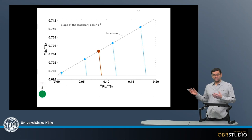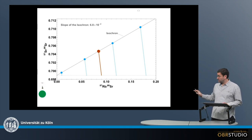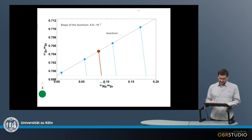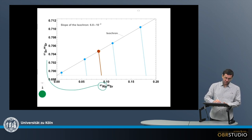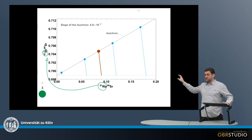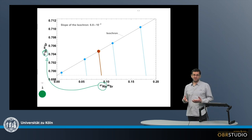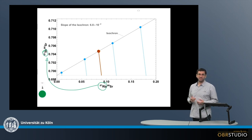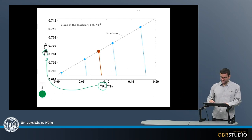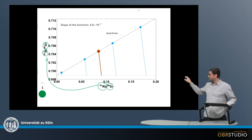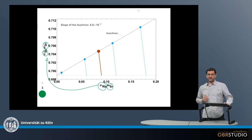An isochron plot is structured as follows: on the x-axis is the parent nuclide, which in this case is rubidium-87, and on the y-axis is the daughter nuclide, which is strontium-87. Isotopes are always reported as ratios, so we need a normalizing isotope — in this case strontium-86 — used for both axes.